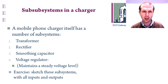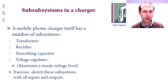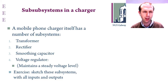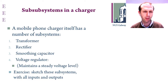We started talking about this briefly last week, but we're going to look today at the charger — a mobile phone charger would be a good example — and the various subsystems that are in there. The charger subsystem itself has a number of sub-parts: a transformer which transforms from a high voltage to a low voltage, a rectifier which goes from an AC waveform towards a DC waveform, a smoothing capacitor, and then a voltage regulator.